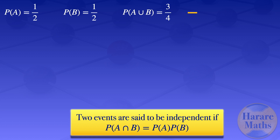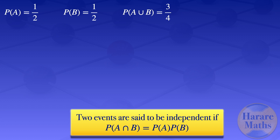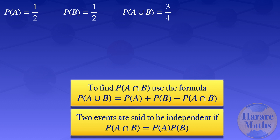In this case, what we are given is the probability of A union B, so we need to use that to find the probability of A intersection B in order to determine if those events are independent. To do this, we use the principle of inclusion and exclusion, which says that the probability of A union B is equal to the probability of A plus the probability of B minus the probability of A intersection B.